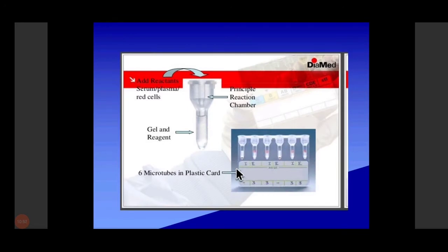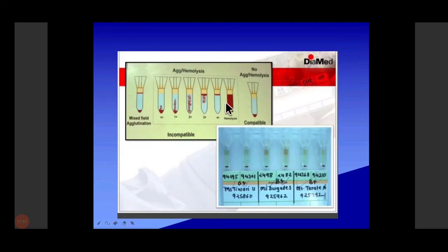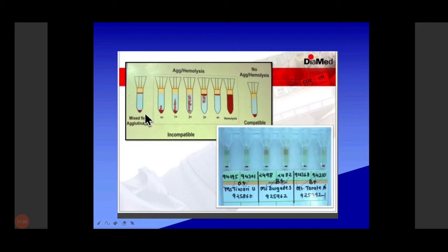For the gel card cross-matching: add the reactants — donor cells and recipient serum — just 15 minutes incubation at 37 degrees Celsius, then centrifuge. There is a grading system. If there is full hemolysis, we should not use it. If blood stays completely at the top, it indicates agglutination and is incompatible. If 4+, it is incompatible. If 3+, just diffusing. If 2+, throughout diffusing. If 1+, little from the start.